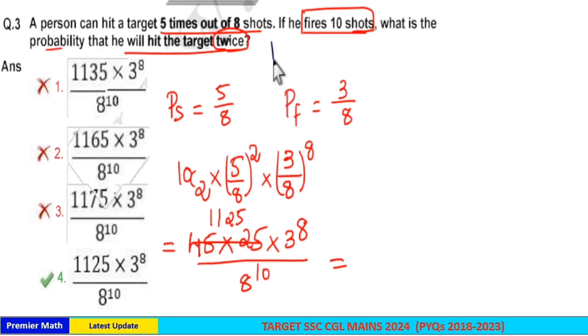That is here the formula is equal to NCR into P raised to R into Q raised to N minus R. Here N is equal to 10, that is you are hitting the target 10 times.